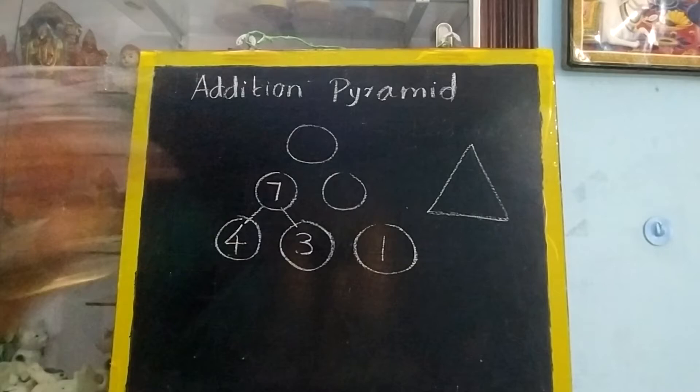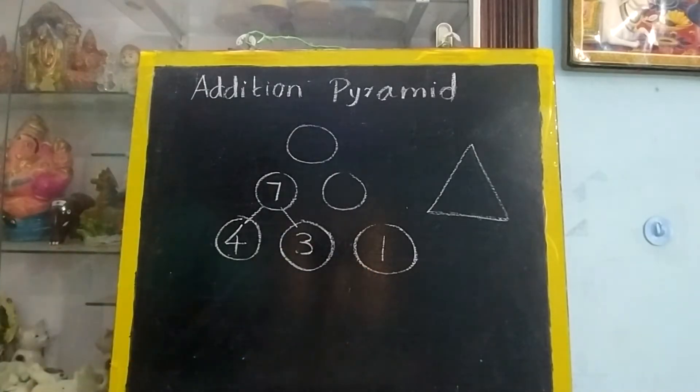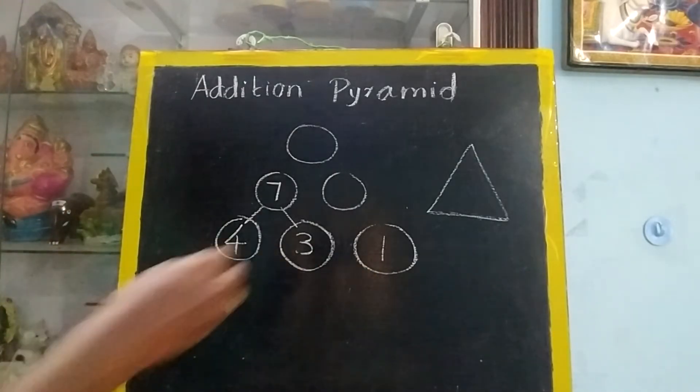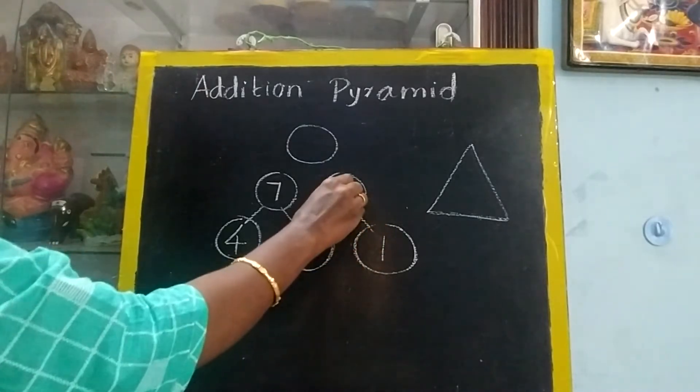Now, same with these two in this circle. Add 3 plus 1, 3 plus 1, 4. So these two circles answer will come here.